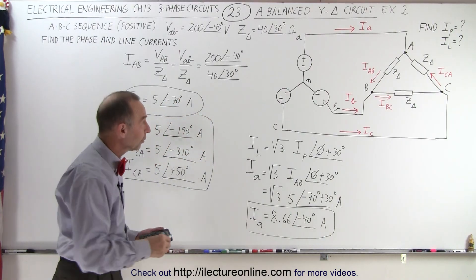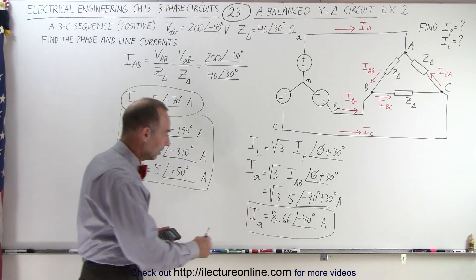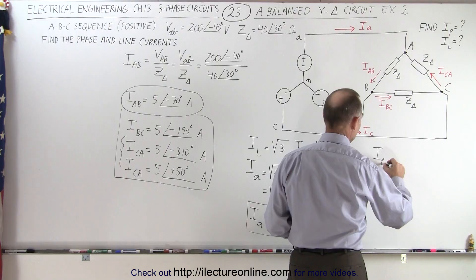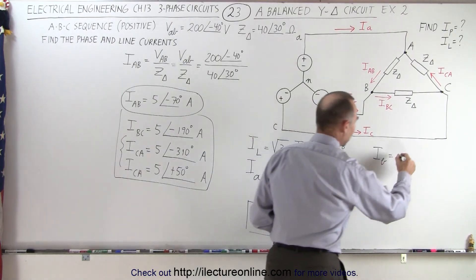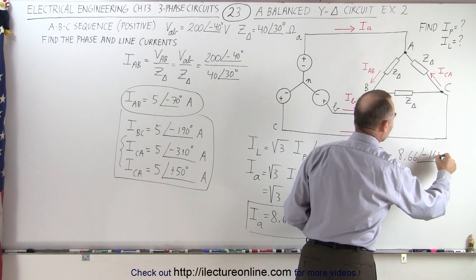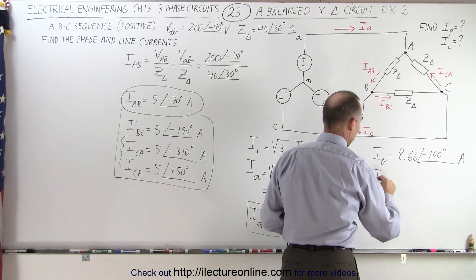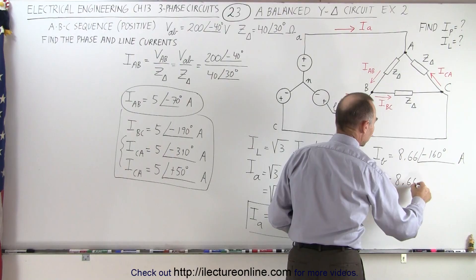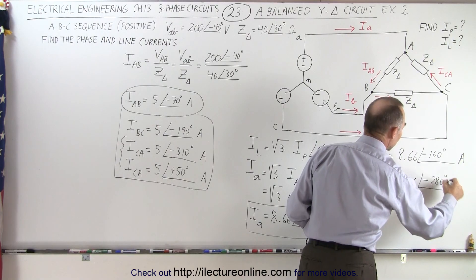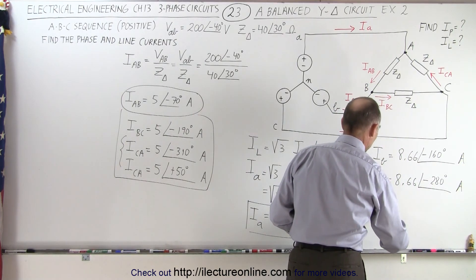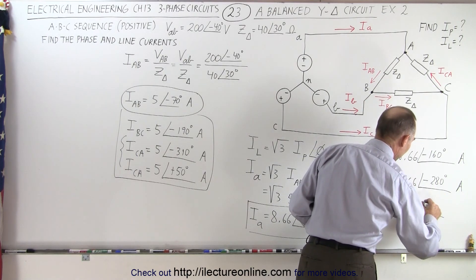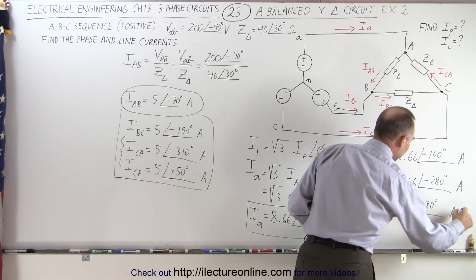To find the other two line currents, IB and IC, we use the same magnitude but with phase angle differences of 120 degrees. So IB equals 8.66 amps with a phase angle of minus 40 minus 120, which is minus 160 degrees. And IC equals 8.66 amps at another minus 120, giving minus 280 degrees, which can also be written as positive 80 degrees.